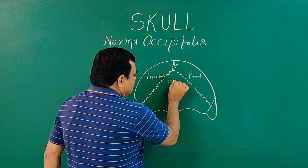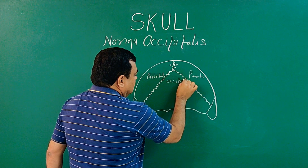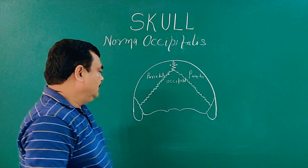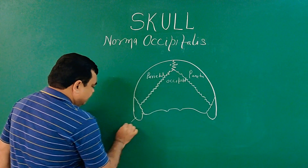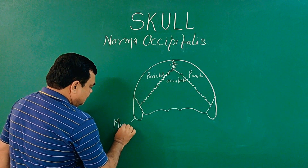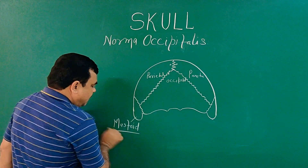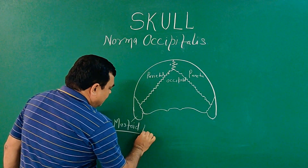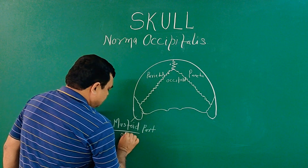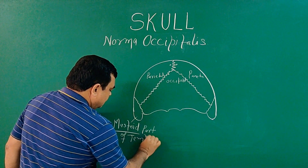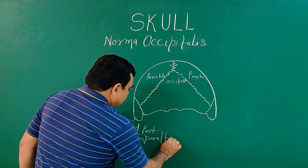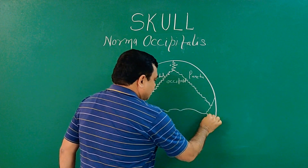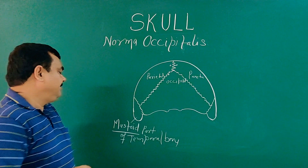This bone is the occipital bone. This is the squamous flat part of the occipital bone. And this is the mastoid — the mastoid part of the temporal bone. Mastoid means breast-shaped, like a breast, so this is the mastoid part of the temporal bone.